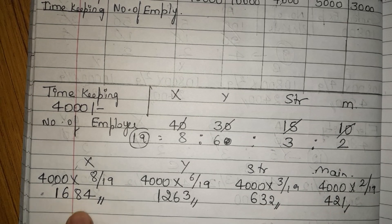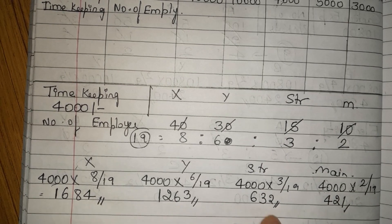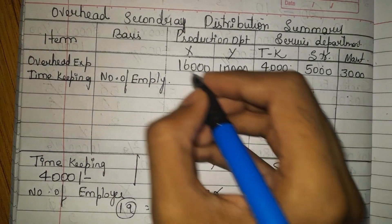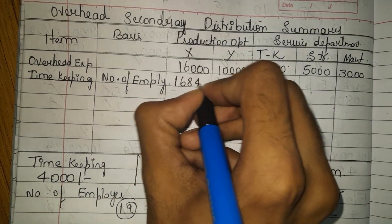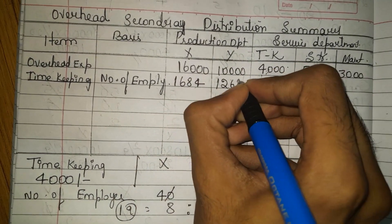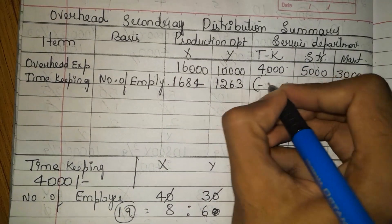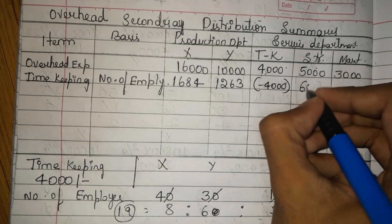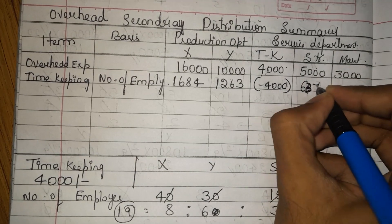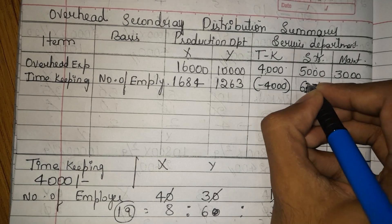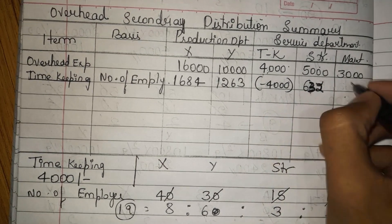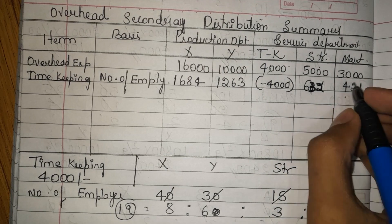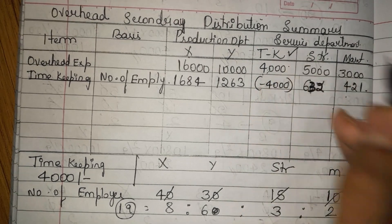So we write 1,684 for X, 1,263 for Y, 632 for stores, and 421 for maintenance. Timekeeping department total of 4,000 is shown as a deduction (minus 4,000). This is how we have divided the timekeeping department cost.